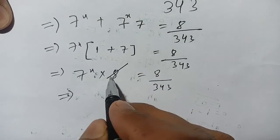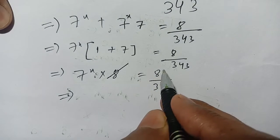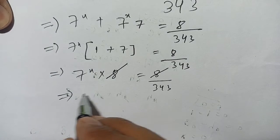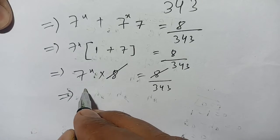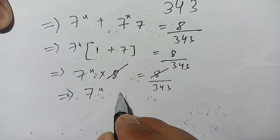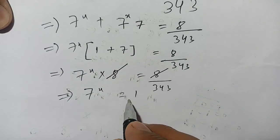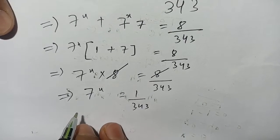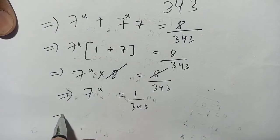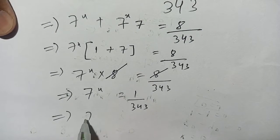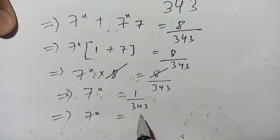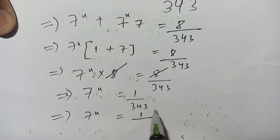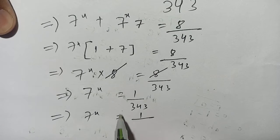After canceling 8 on both sides, the remaining part is 7 power x is equal to 1 divided by 343.